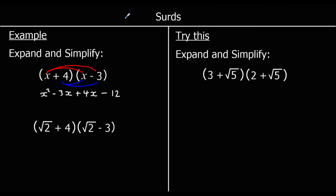And we can simplify by collecting like terms. We've only got one x squared term and one number by itself, but we've got two x terms, so we can simplify them. We leave x squared. For the x terms, I've got negative 3x plus 4x. Negative 3 plus 4 is 1, so I've got 1x, which I just write as x. And I've got minus 12 on the end. So the answer is x squared plus x minus 12.